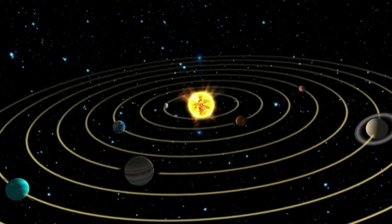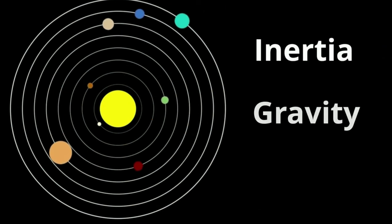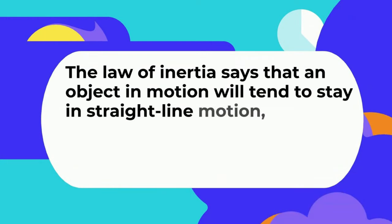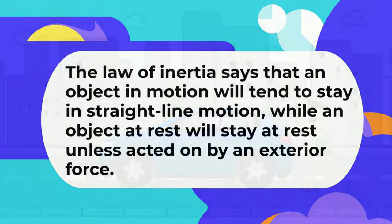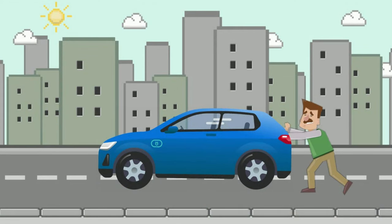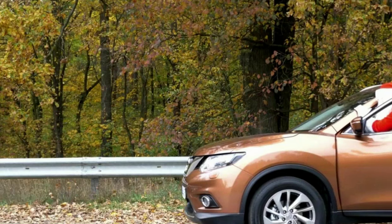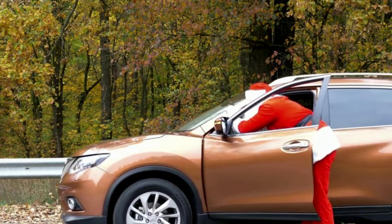Planets revolve around the Sun because of two forces at work: inertia and gravity. The law of inertia says that an object in motion will tend to stay in straight-line motion, while an object at rest will stay at rest unless acted on by an exterior force. For example, if you try to push a heavy object like a car, it's hard to get it moving because it will tend to stay at rest. But once it starts moving, it becomes a little easier, as inertia tends to keep it moving.